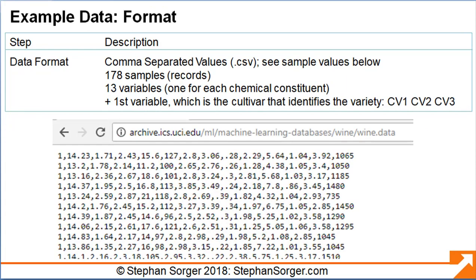The data set is in comma-separated values, or CSV format, as shown in the image. Note that the data does not include a header row, which is the first row at the top of the data set with the descriptive names for the variables. The data includes 178 samples, with 13 continuous numerical variables, and one categorical variable, namely the cultivar, that identifies the variety: CV1, CV2, and CV3.